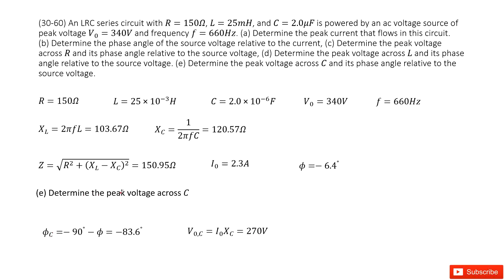Next, determine the peak voltage for C. The peak voltage for C equals the peak current I₀ times X_C, and we get the answer there. For the phase angle relative to the source voltage: C lags the current by 90 degrees, so we use negative 90° minus φ to get the phase angle. Thank you.